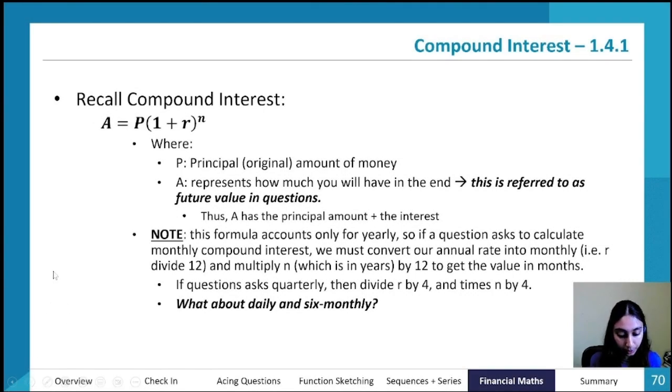Going back to year eight or year nine where you learned about compound interest, A equals P times one plus r to the power of n, where P is the principal, the original amount of money that you borrowed, and A is the future value.